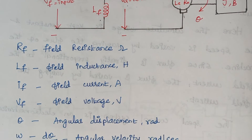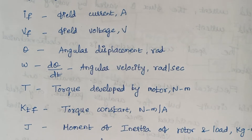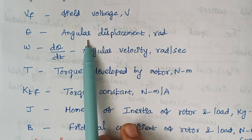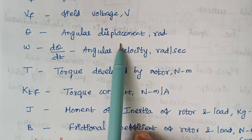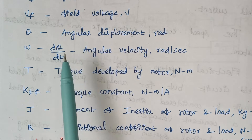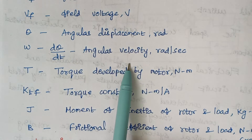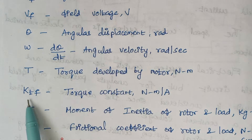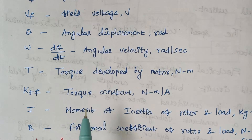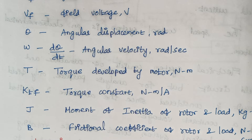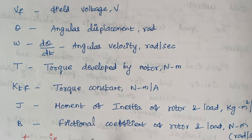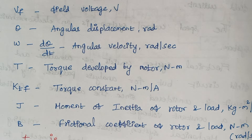We need to be familiar with some key terms. Theta is the angular displacement, omega is d-theta/dt and is known as angular velocity. T is the torque developed by the motor, KTF is the torque constant, J is the moment of inertia of the rotor and load, and B is the frictional coefficient. Now we are going to analyze the field and mechanical parts individually.